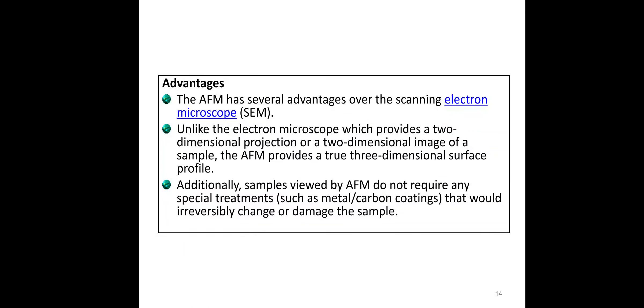AFM has several advantages over scanning electron microscopy. SEM provides only a two-dimensional projection of the image, while AFM provides three-dimensional projection. Samples viewed by AFM do not require special treatment such as metal or carbon coatings needed for SEM. In non-contact or tapping mode, the sample is not damaged, whereas in contact mode the sample can be damaged.